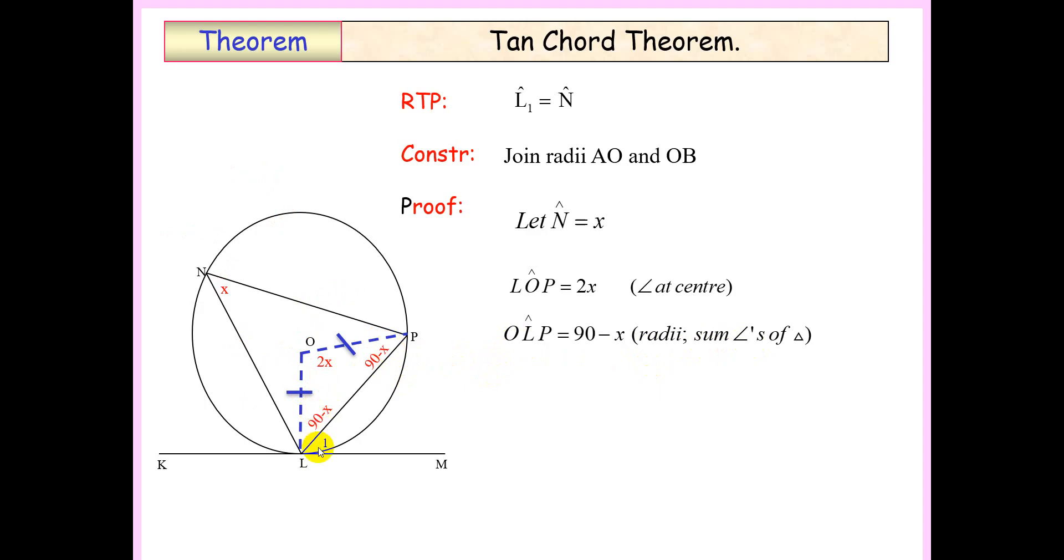Now we want to get to L1. To get to L1, we know that angle OLM is 90 degrees, and the reason is that the radius is perpendicular to a tangent. Now if OLM is 90 and angle OLP is 90 minus x, by subtraction we will have L1 to be equal to x.